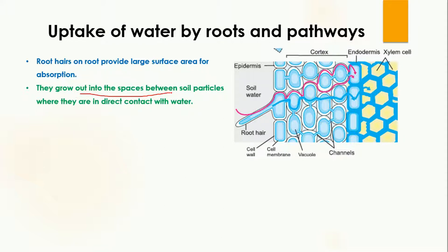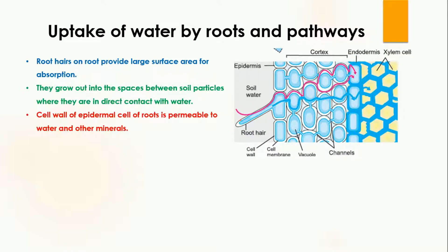Root hairs grow out into the space between the soil particles where they are in direct contact with the water. For example, in this diagram you can see the root present in the soil and it extends between the soil particles. Because of this extension, the surface area is increased and now the root is in direct contact with the water.